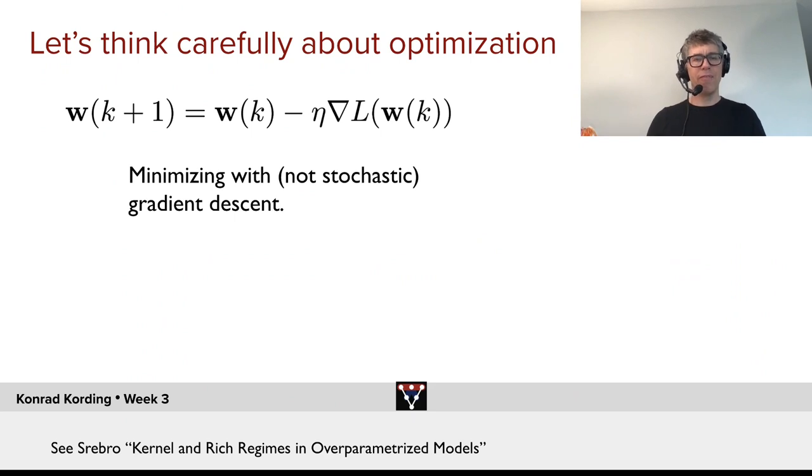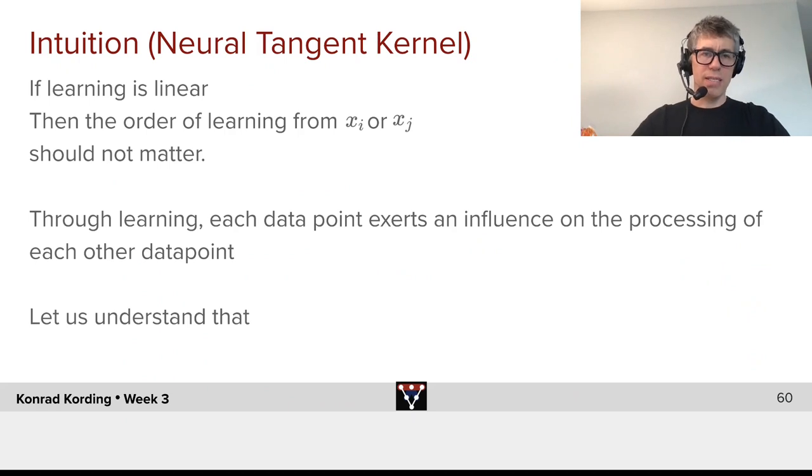Let's think carefully about optimization. What we have is that the weight at the next time step is the current weight minus a small constant times the gradient of the loss with respect to the weights, which we do with stochastic gradient descent.